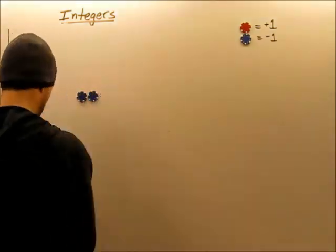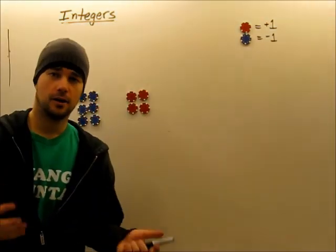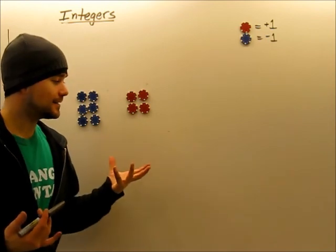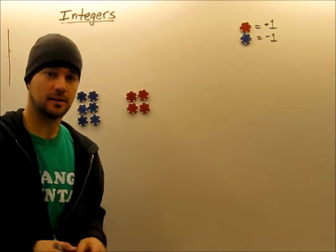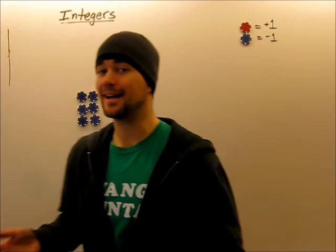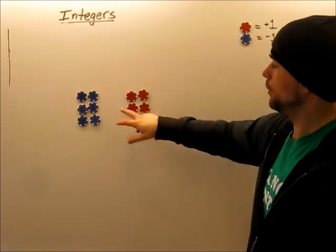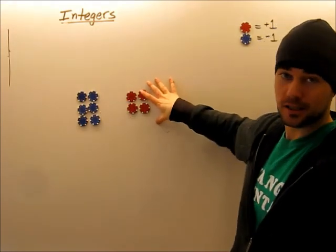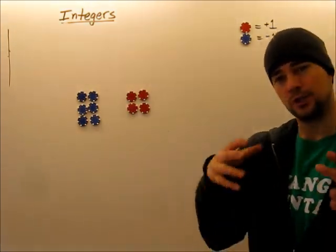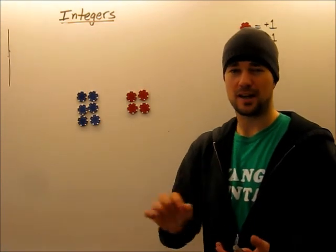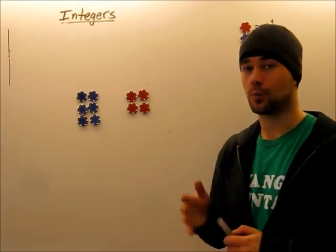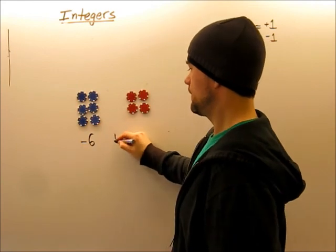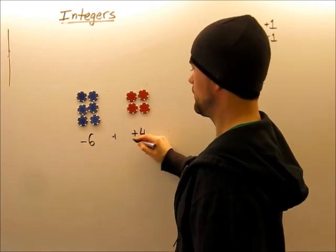Next example. What if we're given something like this, and it says complete, or something crazy like that. We need to first be able to identify what exactly we're dealing with. Well, since blue is negative one, we know that this here is negative six. And red is positive one, this here is positive four. So we should start in our notebooks by writing down what we have.